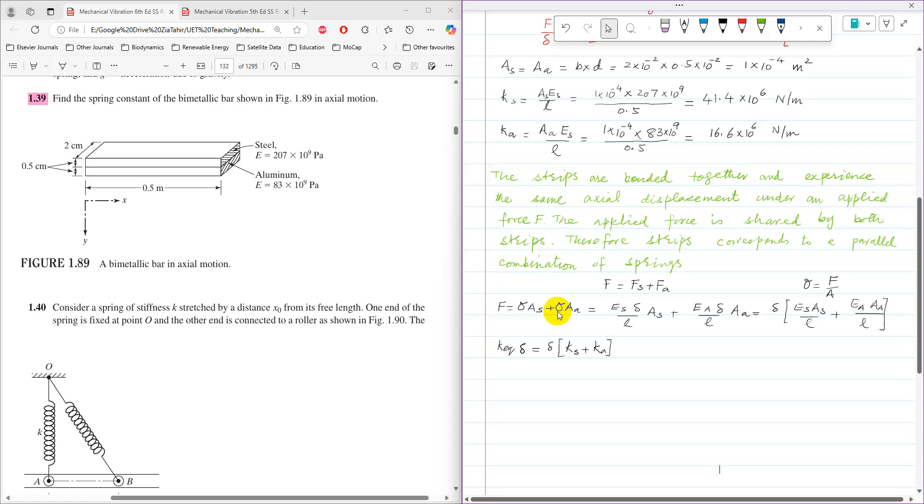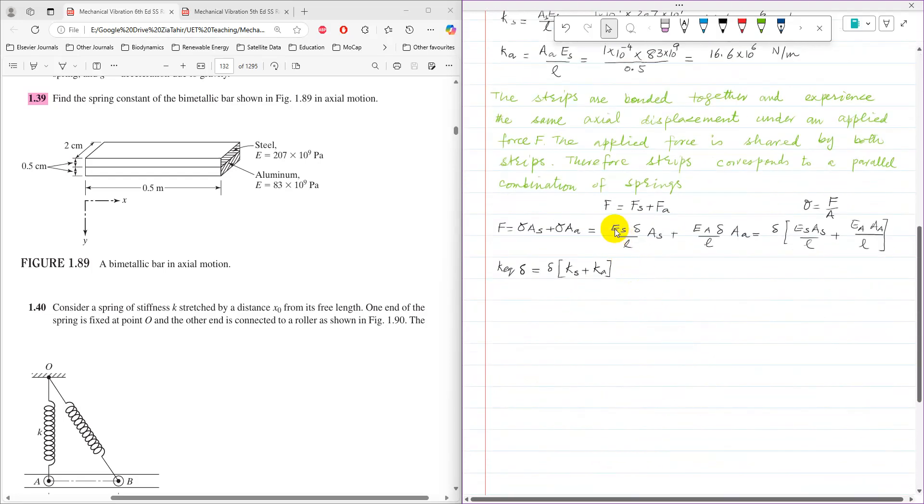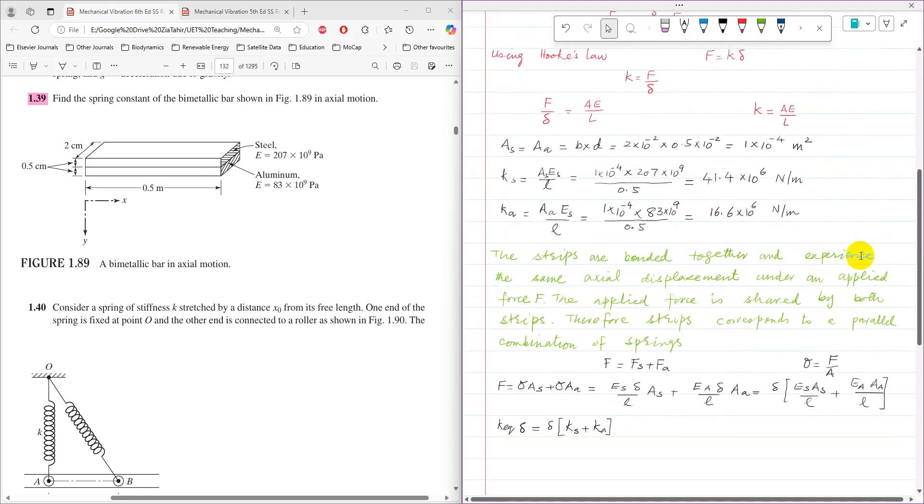Stress can be written using the relationship stress equals strain times modulus of elasticity, which is delta over L times E. After simplifying and factoring out delta, we get delta times (E_s A_s over L plus E_a A_a over L).